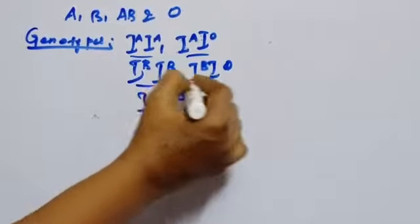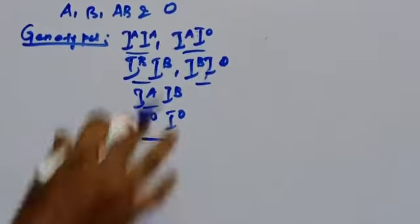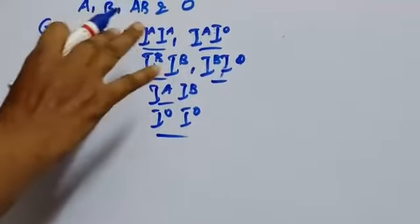One, two, three, four, five, six. So how many genotypes made? Six genotypes and how many blood groups? Four blood groups.